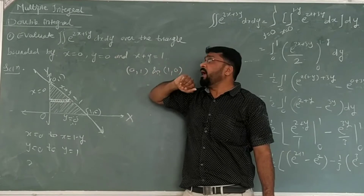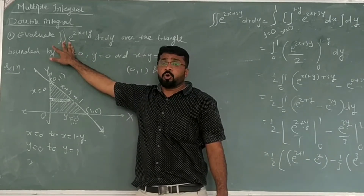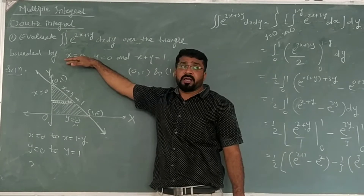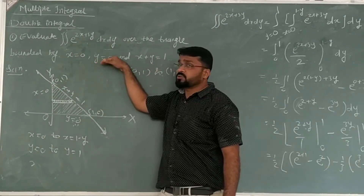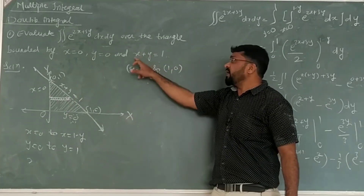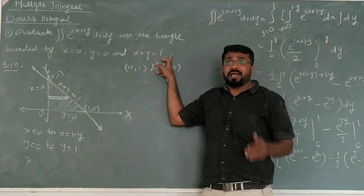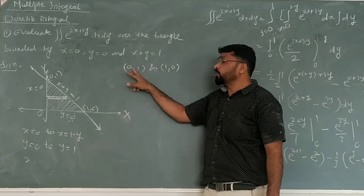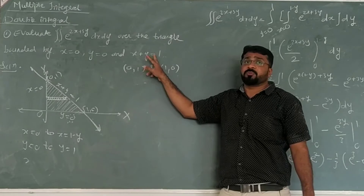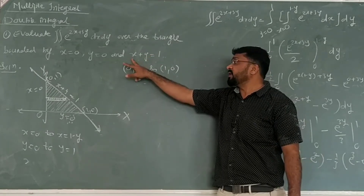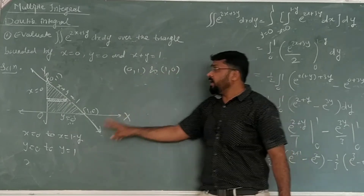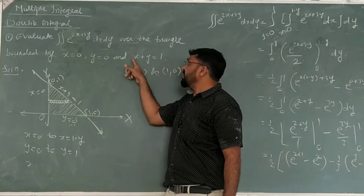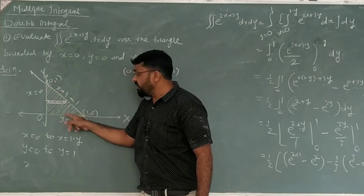After drawing the region, we observe the limits of x and y. We can identify the region through x and y. Now, x equals 0 means the y-axis, and y equals 0 means the x-axis. We then draw the line x plus y equals 1, and we get this shaded triangle.